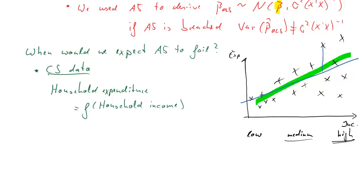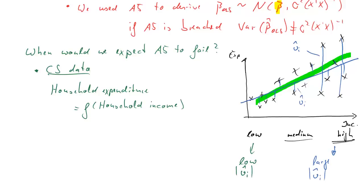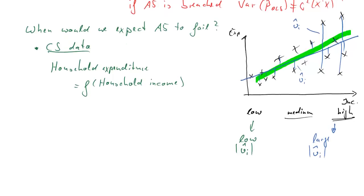If we estimate a linear regression — say the blue line — the distances of the observations from that line are the estimated residuals, the u_i hats. We have large values of absolute u_i hats for high incomes and low values for low-income observations. These absolute values of the regression residuals are often used as a measure of the variance of the error terms. Alternatively, we could use the squared values, and again we get large values for high-income and small values for low-income observations.